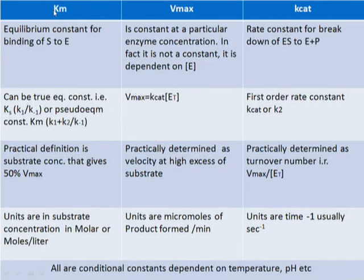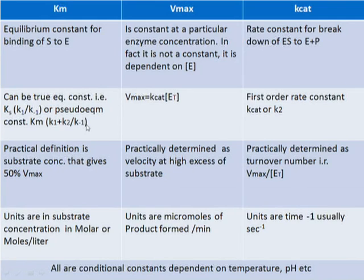The two constants seen in the equation are Km and Vmax. Km is the equilibrium constant for binding of E and S to form the ES complex. Km can be a true equilibrium constant Ks = k-minus-1/k1, or a pseudo-equilibrium constant = (k1 + k2)/k-minus-1. Km gives a measure of the enzyme's affinity for the substrate, and its units are the same as substrate concentration — molar or moles per liter.